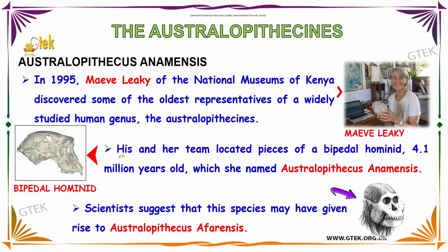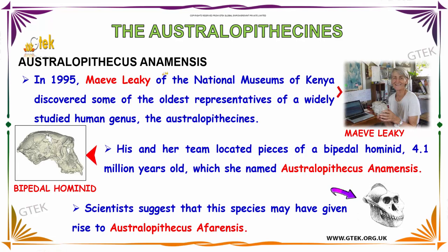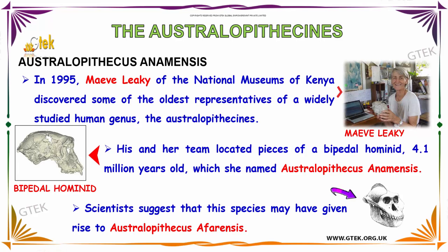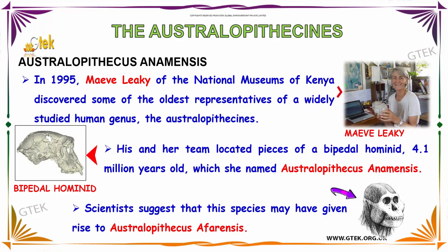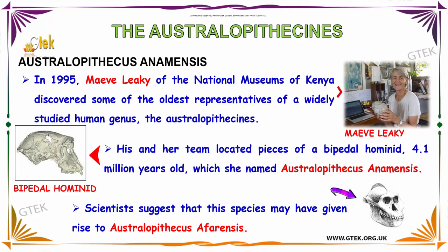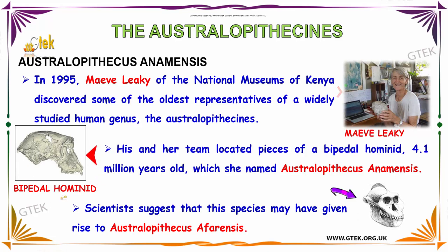Now we are going to see about the Australopithecines. Australopithecus anamensis: in 1995, Meave Leakey, represented here at the National Museums of Kenya, discovered some of the oldest representatives of the widely studied human genus, the Australopithecines. Meave Leakey and her team located pieces of a bipedal hominid that is 4.1 million years old.